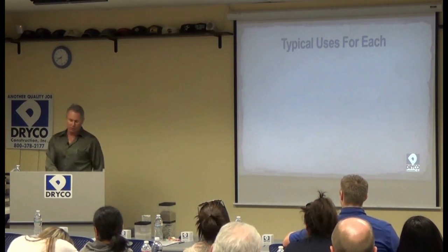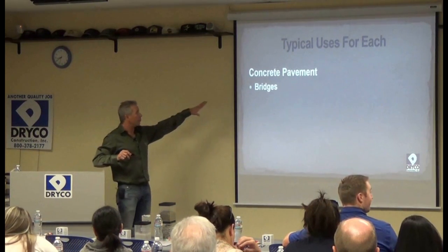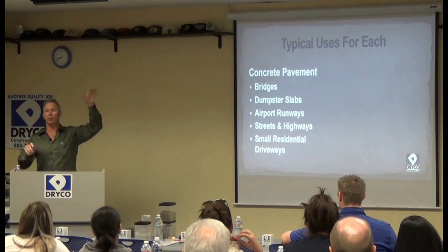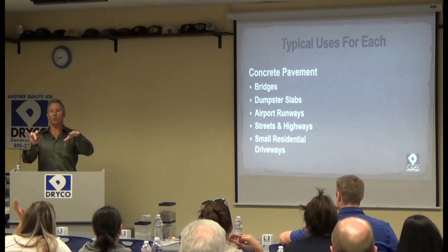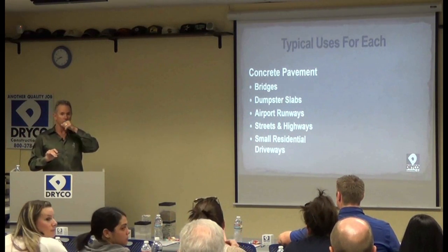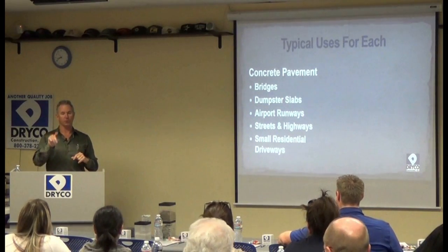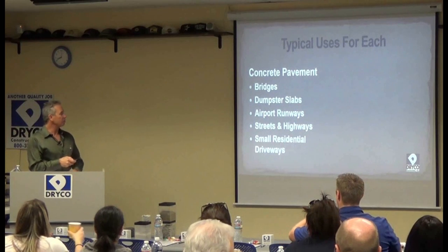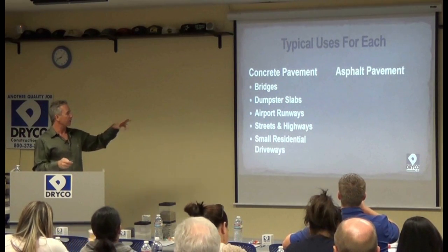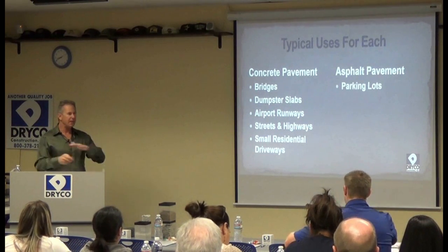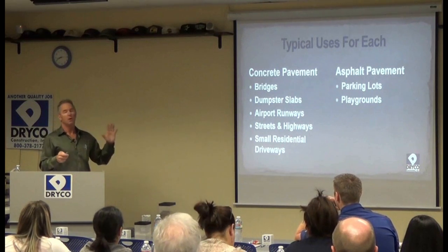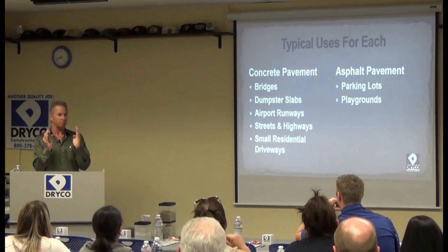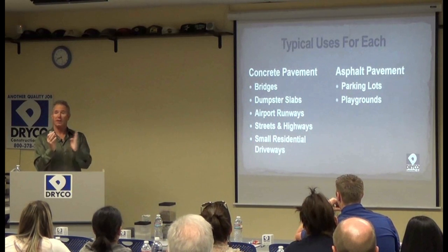Typical uses for each: concrete is used for bridges, dumpster pads, airport runways, streets and highways, and small residential driveways. Asphalt pavement is used for parking lots, playgrounds, large pieces of pavement — school playgrounds and parking lots, for example, with a two-and-a-half-month window to get it all done, sometimes less because of summer school. Also airport taxiways, streets and highways, and large driveways.